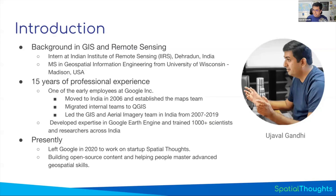One of my big achievements at Google was migrating all our internal users from proprietary software to QGIS. As the Maps team grew into a large operation, commercial software posed restrictions both in terms of cost and in how we wanted to use it — particularly for automation. QGIS served those needs perfectly, and I've been working with it ever since. I also did a lot of work with Earth Engine, and I left Google in 2020 to teach full-time.